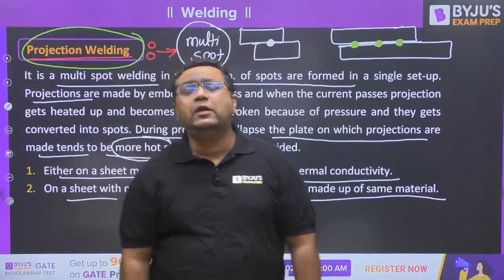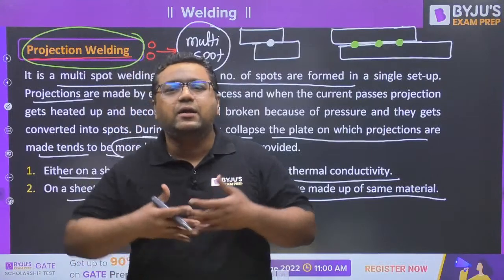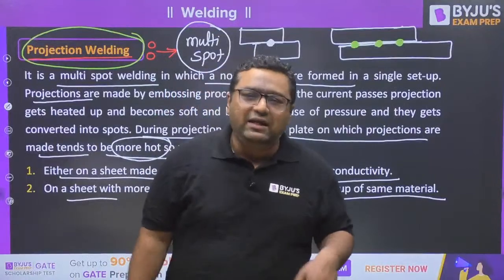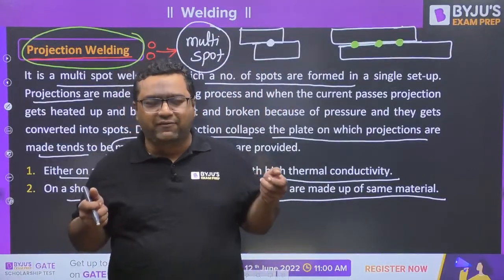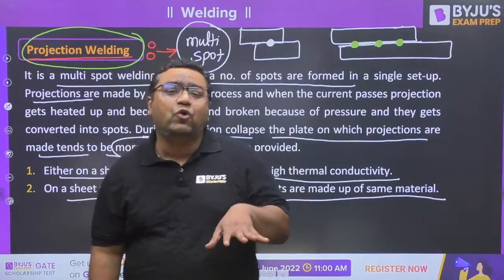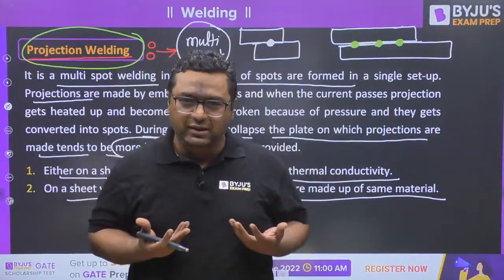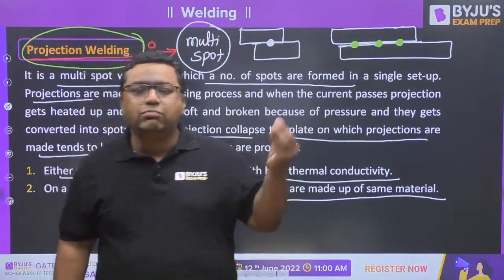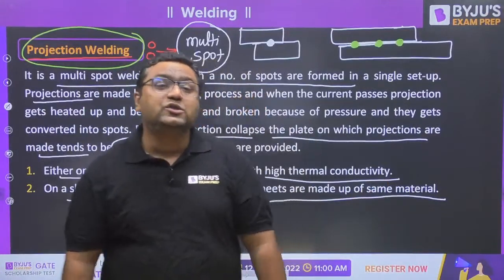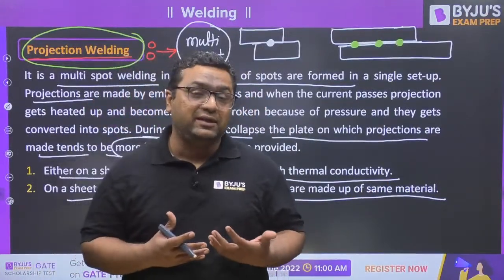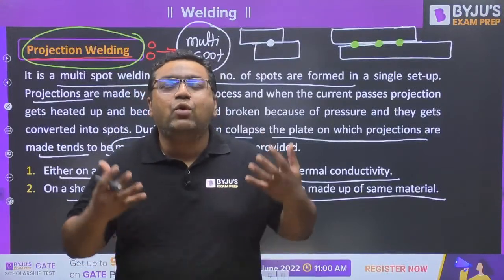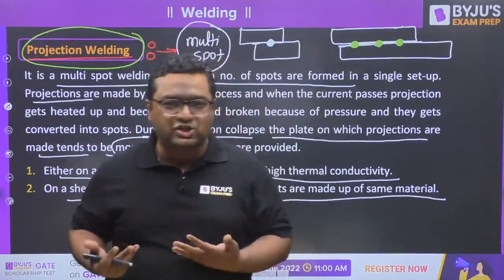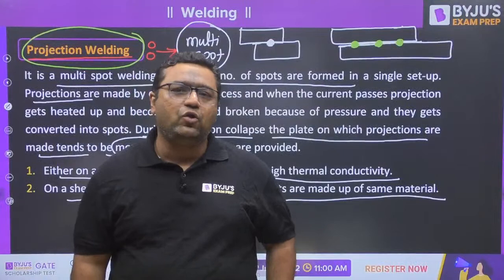Why projections on the thicker plate? Because after plastic deformation more heat is generated. If projections were given on the thin sheet, that sheet may melt out entirely. We need material that can withstand more heat from plastic deformation, so the thicker plate with projections is the safer choice.